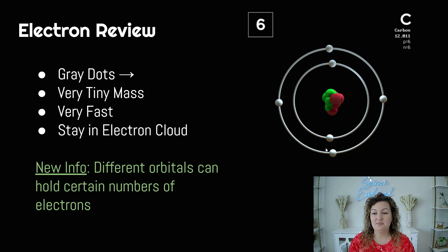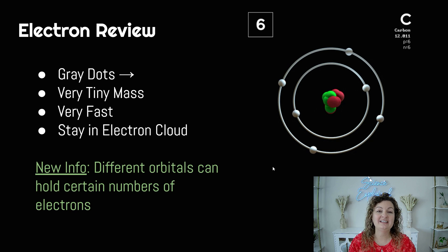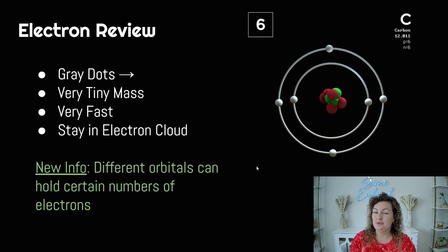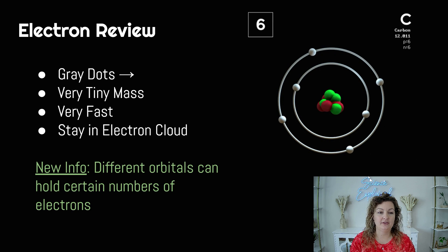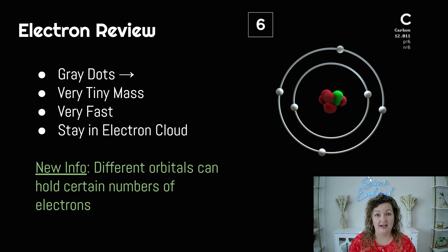So in this model here you can see the electrons are the gray dots that are circulating our nucleus. These are going to be very, very tiny mass, so small in fact we consider it zero when we do any math that's involved with atoms, and they go incredibly fast.